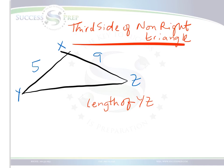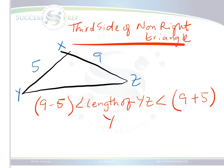To solve a question like this, we're using a very basic triangle concept that helps us understand that to find the third side of a triangle, the length of the third side is between the difference of the other two sides and the sum of the other two sides. So essentially, to find the length of YZ, we just need to create those two inequalities — on the left side we have 9 minus 5, and on the right side we have 9 plus 5.